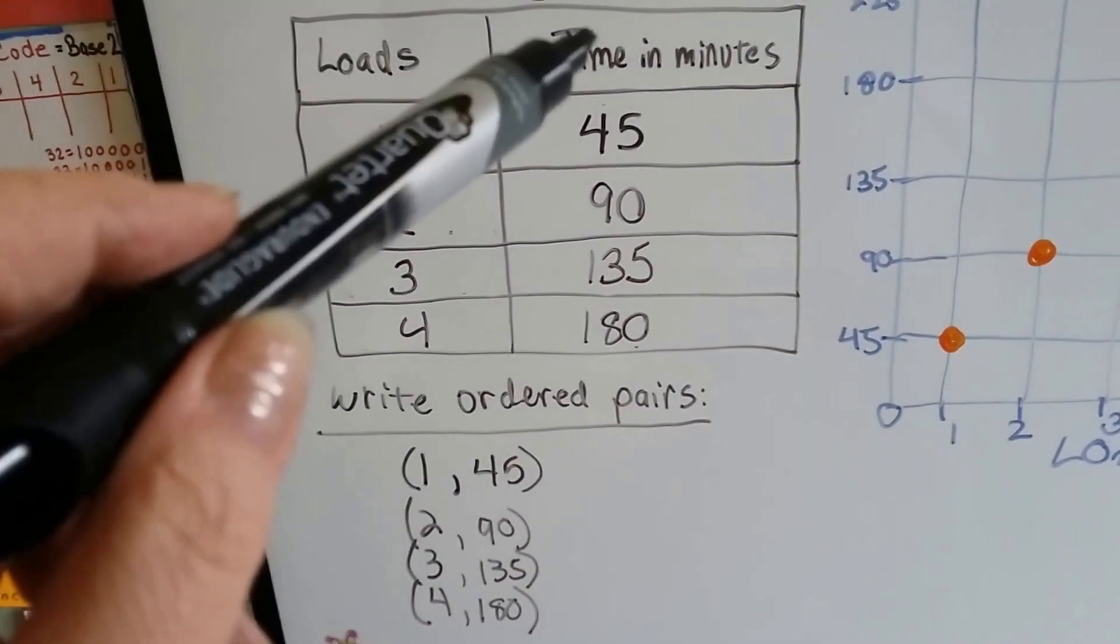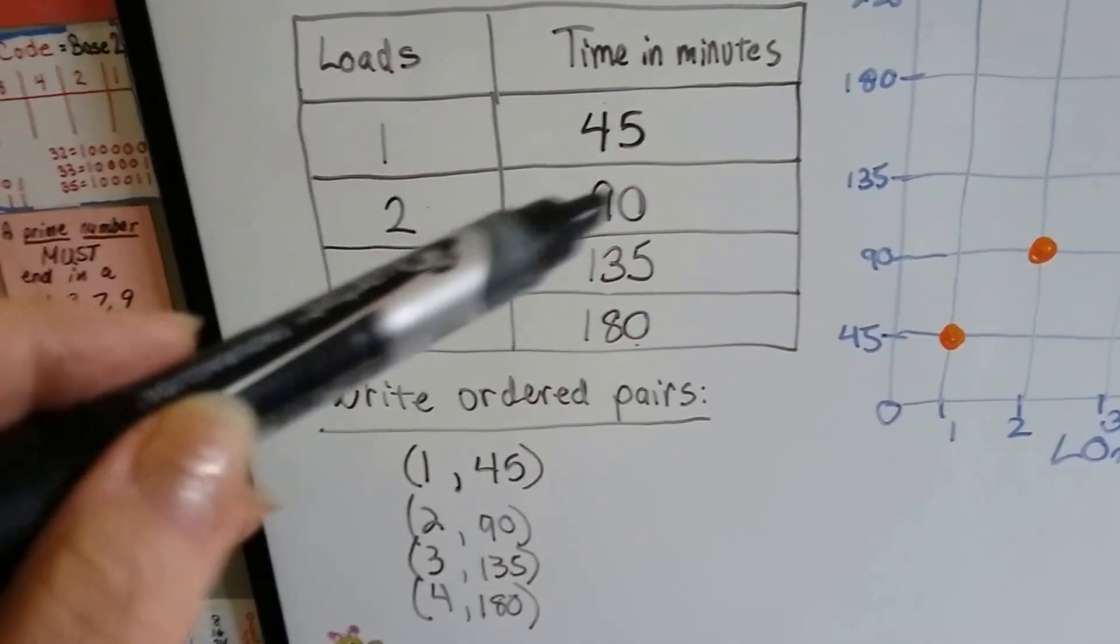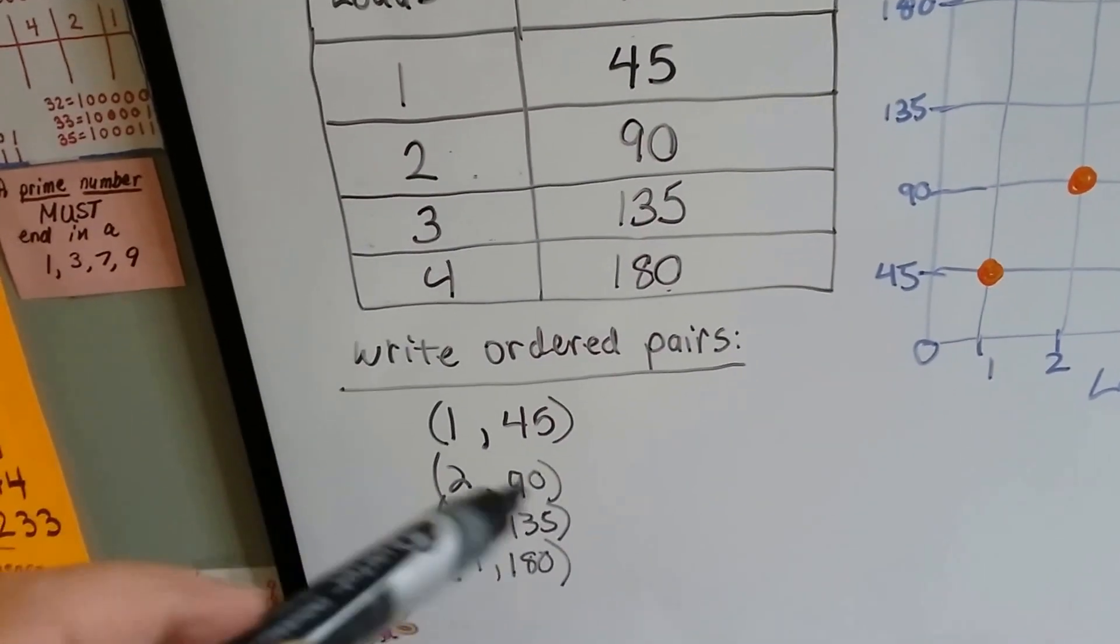So if this is x and this is y, this is our ordered pairs. 1, 45, 2, 90, 3, 135, and 4, 180. Those are our ordered pairs.